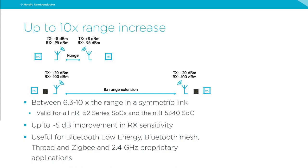When we say you get up to 10 times range increase, this is a factor of improvements on both the receiver sensitivity side and the transmitter output power side. Comparing the 52840 vs. the 52840 with the 21540: the 52840 DK gets up to 12 dB improvement on the transmit side, and we end up around -100 dBm on the receive side. Using the front-end module together with the 52840 gives about an 8× range extension, achieved by improving both the transmitter and receiver sides.